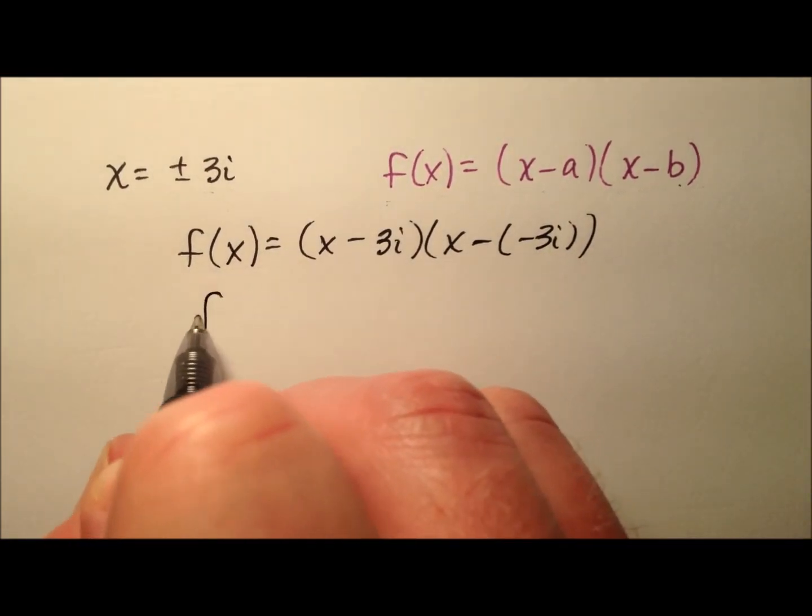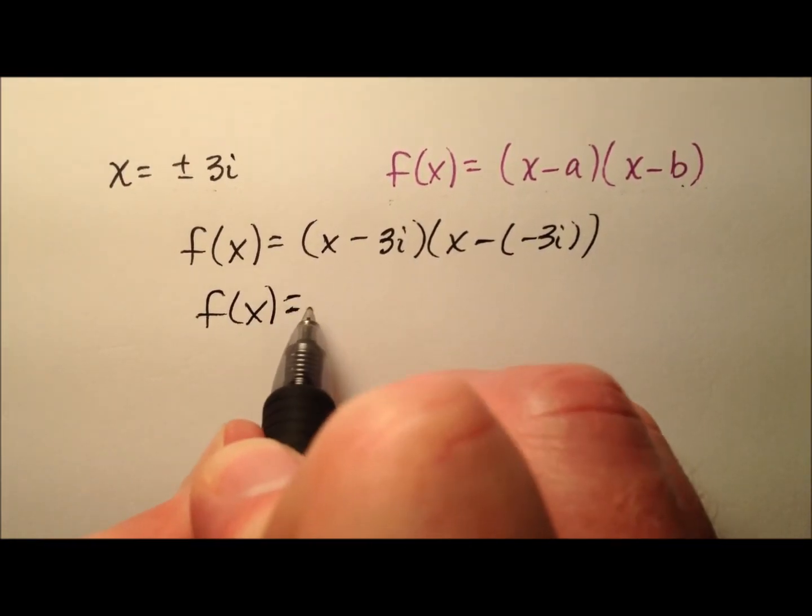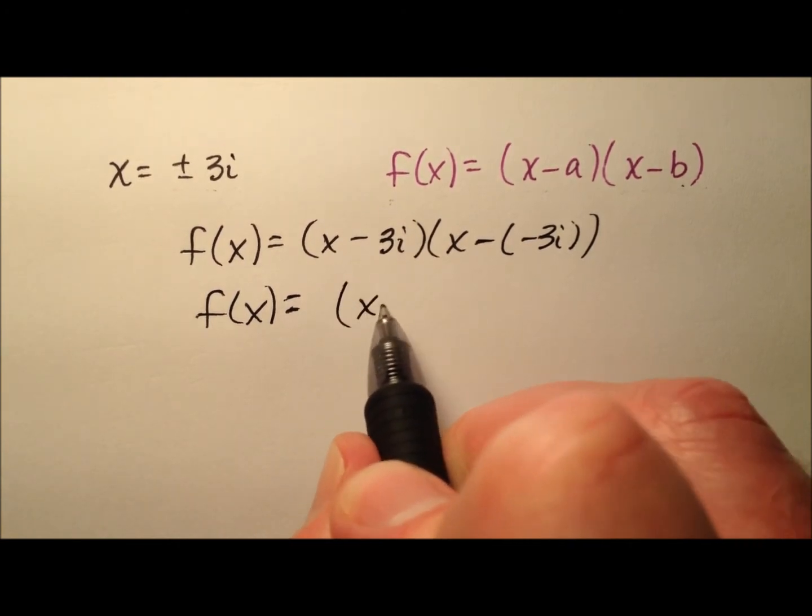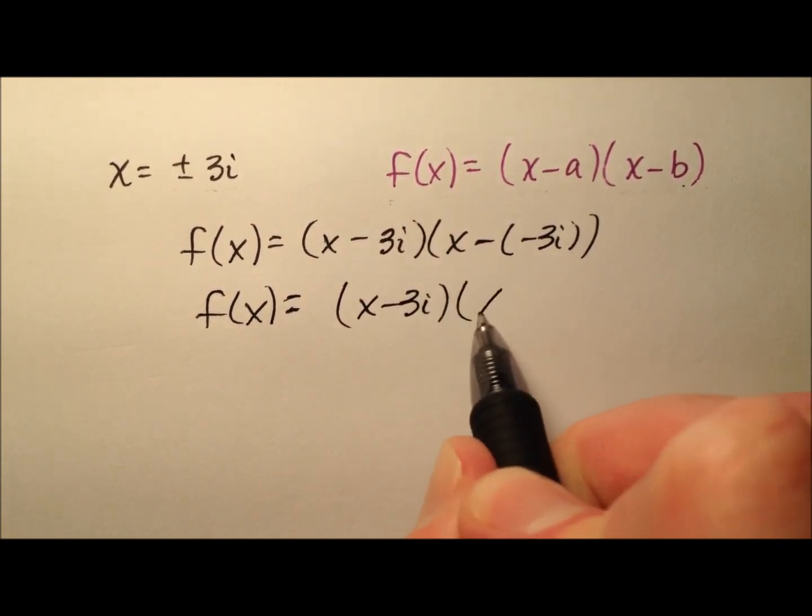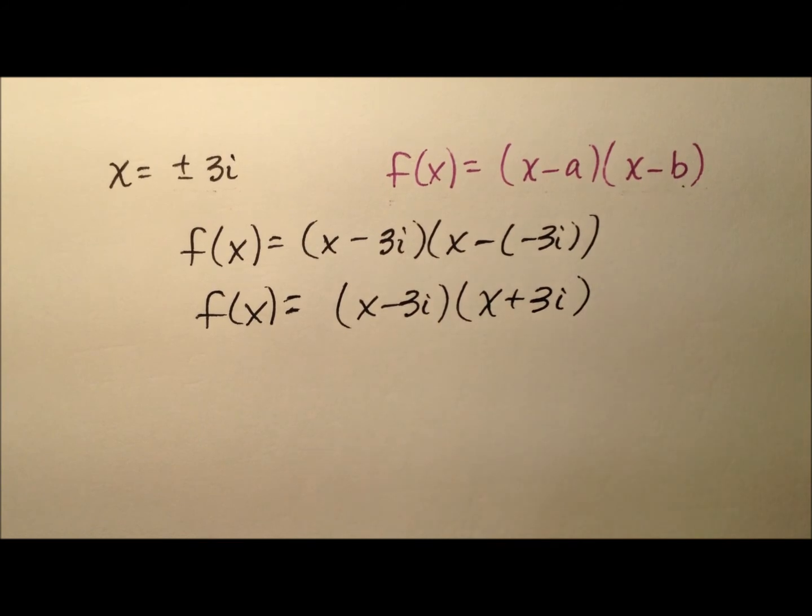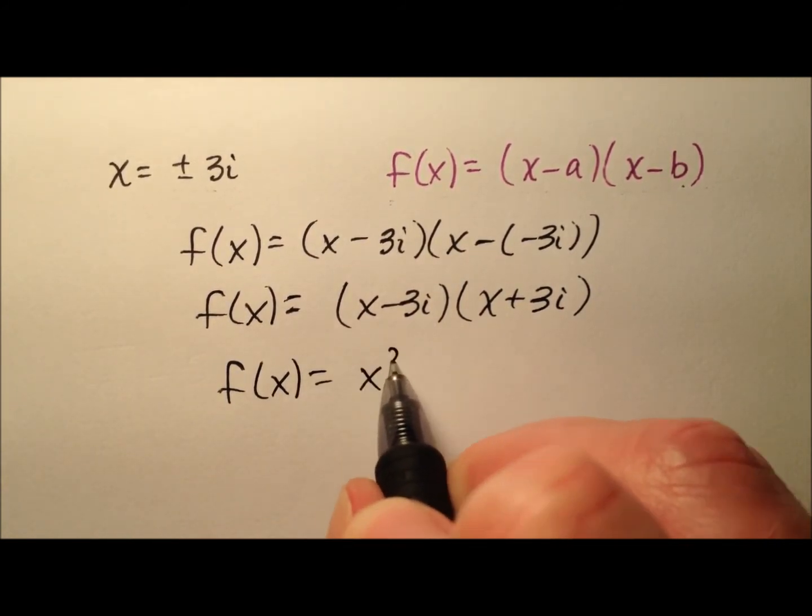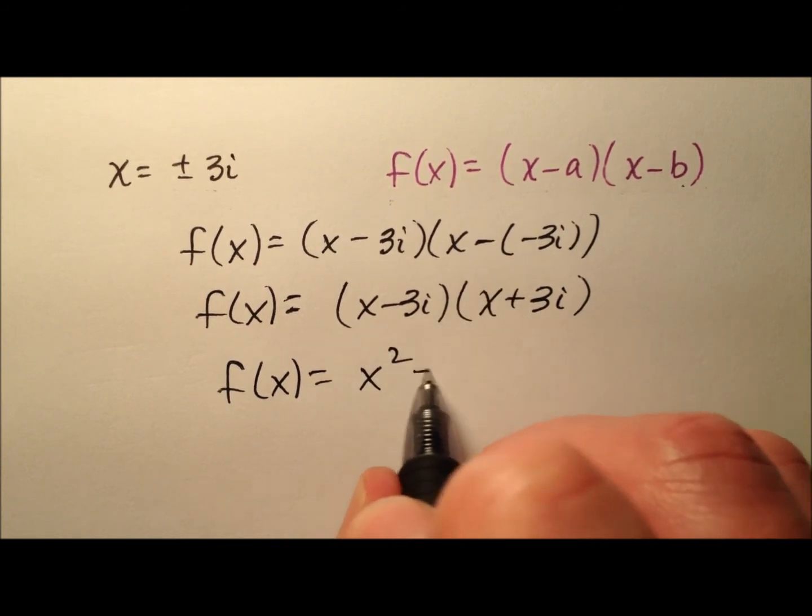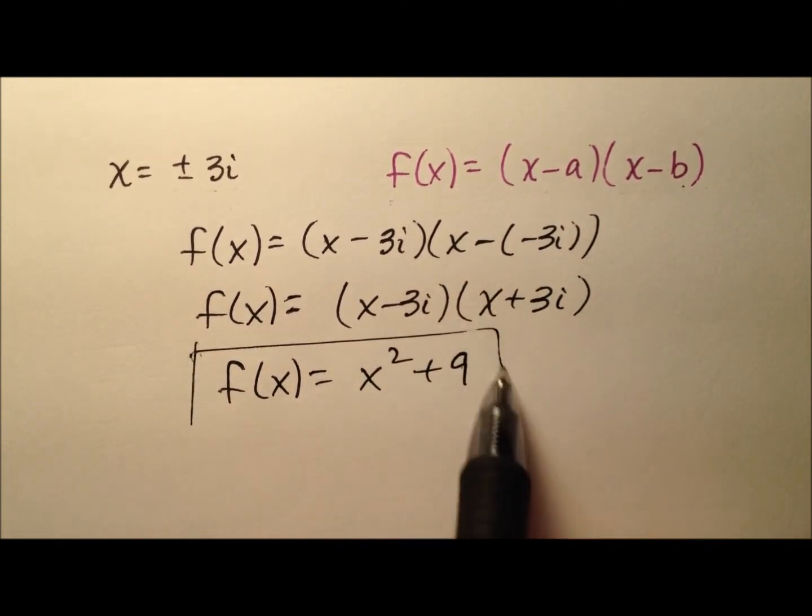So when I simplify this a little bit, x minus 3i and x plus 3i, let's go ahead and multiply these together. It's just the difference of squares. So it'll be x squared and then plus 9.